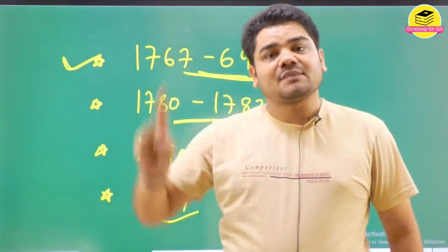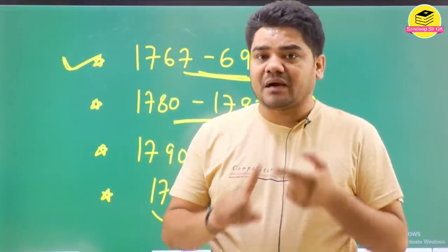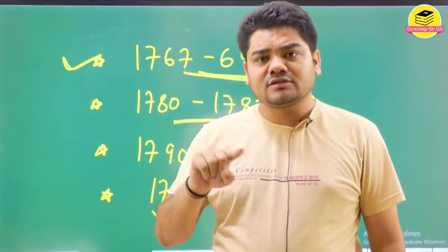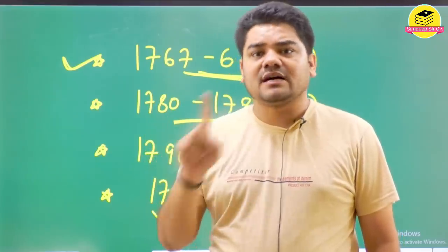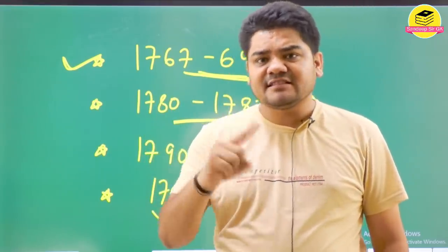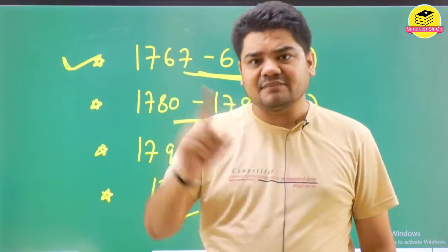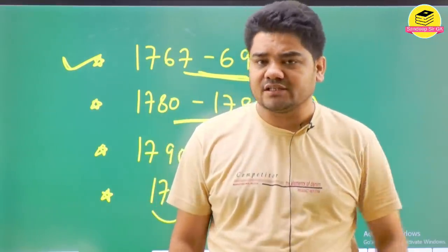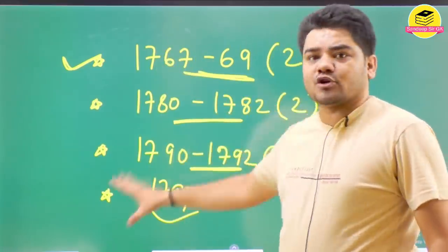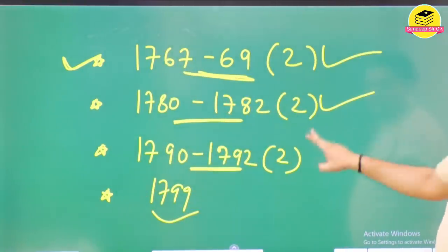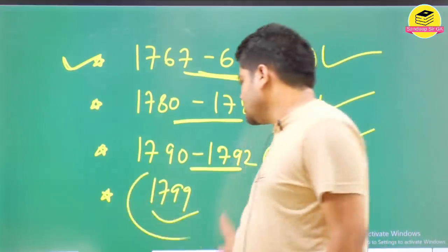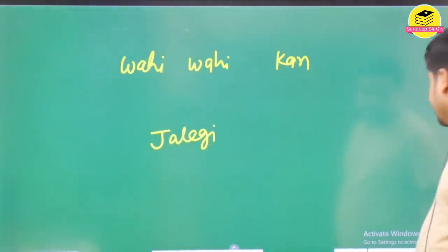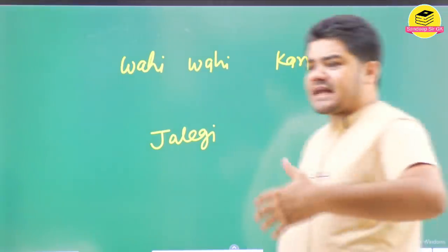Four wars, when did they happen and how many years they lasted. First 1767 to 69, 67 to 69. Second 1780 to 82. Third 1790 to 92, 90 to 92. And fourth was 1799, which completed in just a few days. Four wars, remember this, it's important. Two years, two years, two years. The last one finished in just a few days. Remember this.